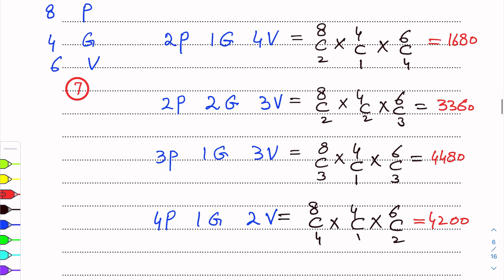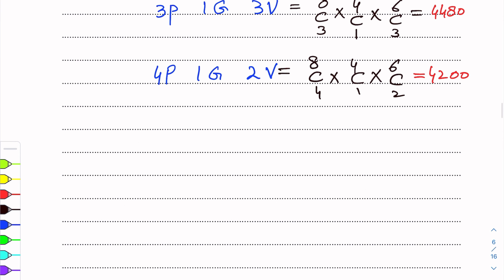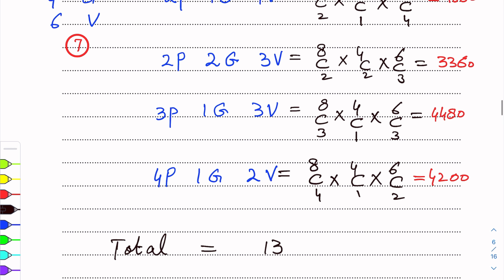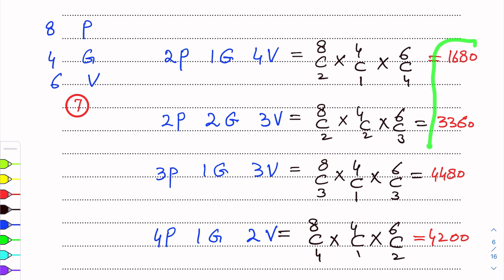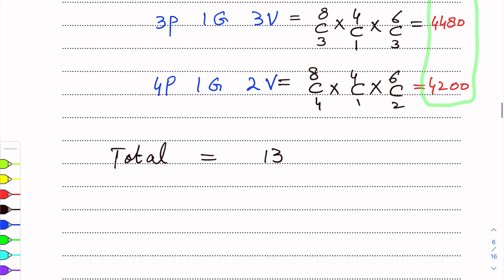Now we will add up all four options. Adding all four options together, the total number of selections is 1680 + 3360 + 4480 + 4200 = 13720. This is the final answer — these are the total number of selections.